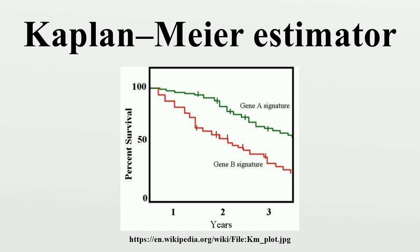An important advantage of the Kaplan-Meier curve is that the method can take into account some types of censored data, particularly right censoring, which occurs if a patient withdraws from a study, is lost to follow-up, or is alive without event occurrence at last follow-up. On the plot, small vertical tick marks indicate individual patients whose survival times have been right censored.